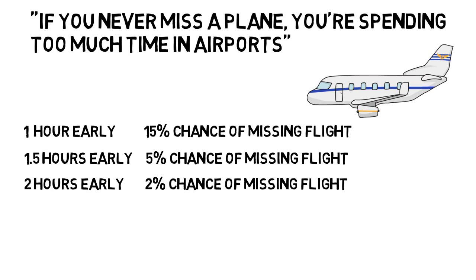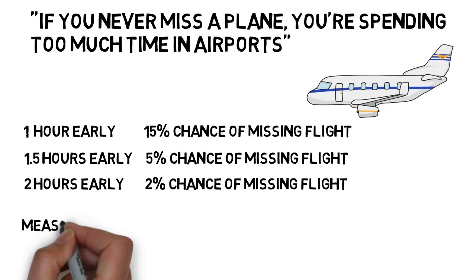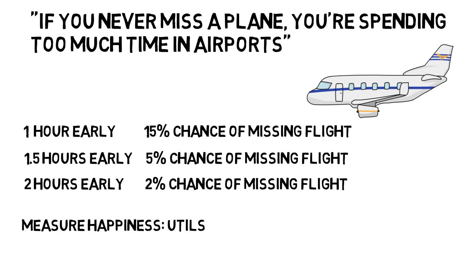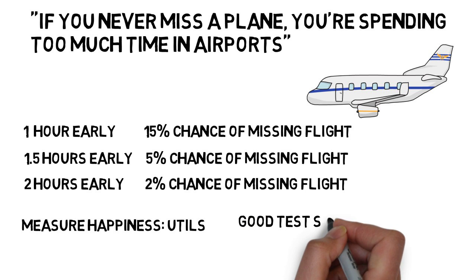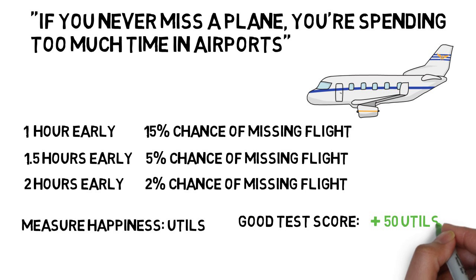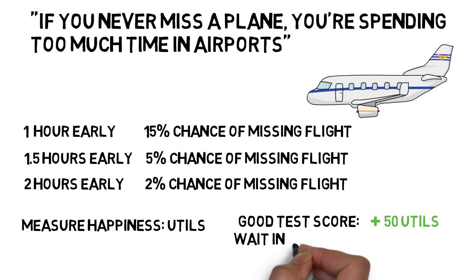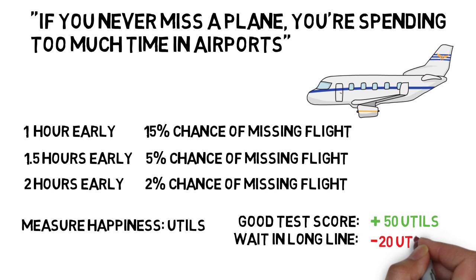We're actually going to measure happiness with a unit called utils — that's just what we'll call it, which is actually a unit of happiness used in microeconomics. Util is short for utility. So maybe getting a good test score gives you plus 50 utils of happiness, and waiting in a long line is a loss of 20 utils because you're not happy with that situation. This is super arbitrary, but we can come up with some numbers relative to others.